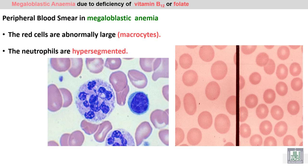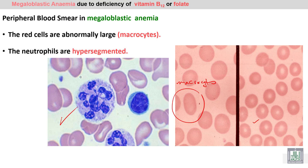The peripheral blood will contain hypersegmented neutrophils — clearly visible here with segments or lobes more than 5. In addition to the hypersegmented neutrophils, there are also oval macrocytes. You can see the oval macrocytes here compared to the normal-sized cells. This oval macrocyte will differentiate megaloblastic macrocytosis from round macrocytes seen in other causes of macrocytosis without megaloblastic changes, which we will discuss at the end of this lecture.